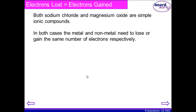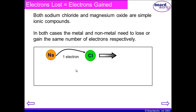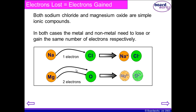Now we are going to look quickly at chemical formulae, using first of all the example of sodium chloride. With sodium chloride, they need to gain and lose the same number of electrons — in this case one — and hence the formula for sodium chloride is NaCl. With magnesium and oxygen, magnesium loses two electrons and oxygen gains two. Because that is the same amount, the formula for magnesium oxide is MgO.